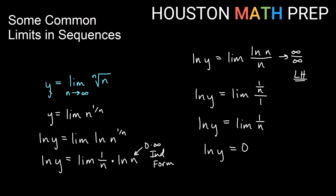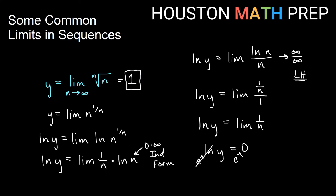Since y is the actual answer to the limit we seek, we need to get rid of the ln. Taking e to the power of both sides gives y equals e to the 0, so y equals 1. The common limit of the nth root of n as n gets larger and larger is 1.